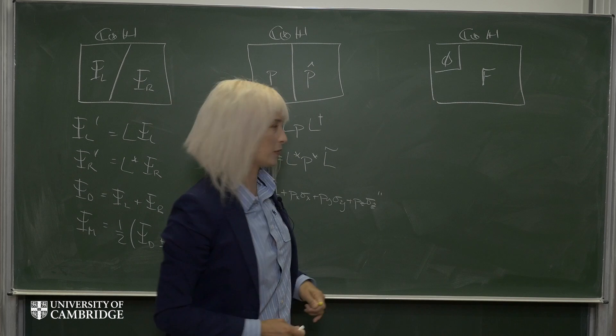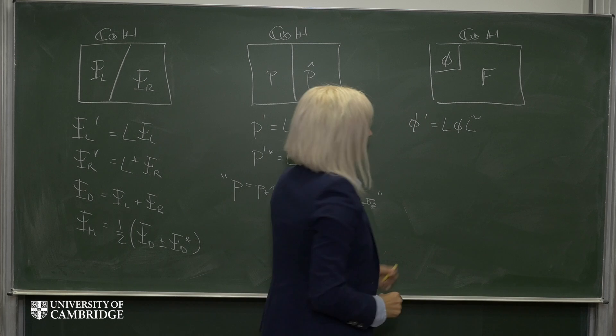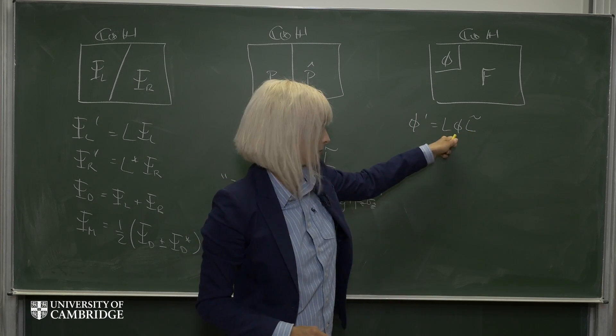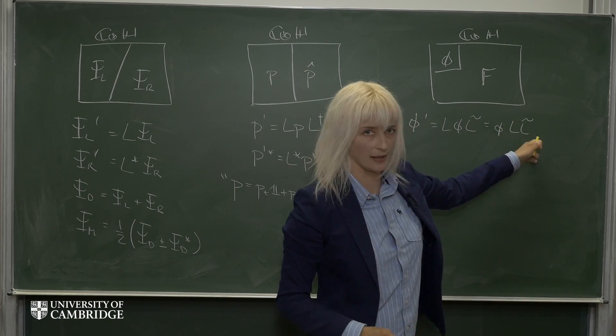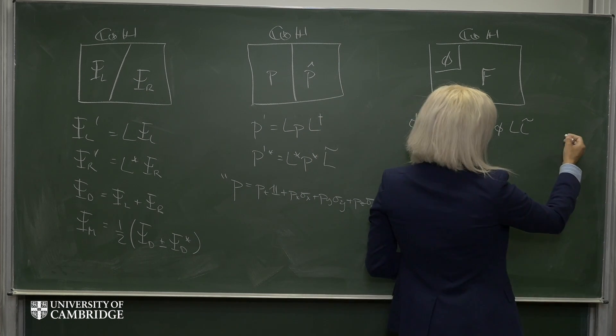So the scalar transforms like this. But the scalar happens to be just a complex number, so it commutes with everything and it comes out. Now this L and L tilde happen to be inverses of each other, so they cancel. And this is in fact a scalar.